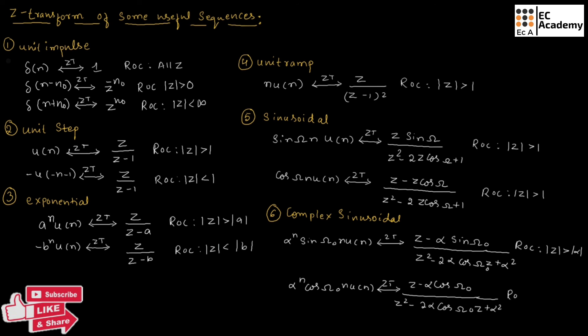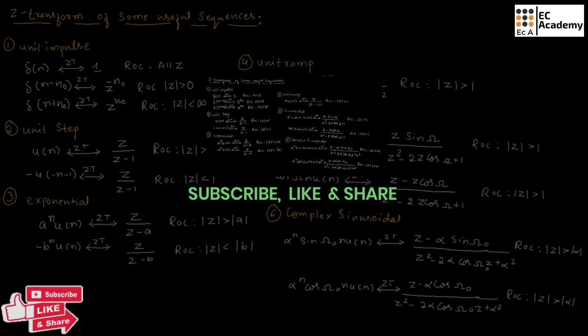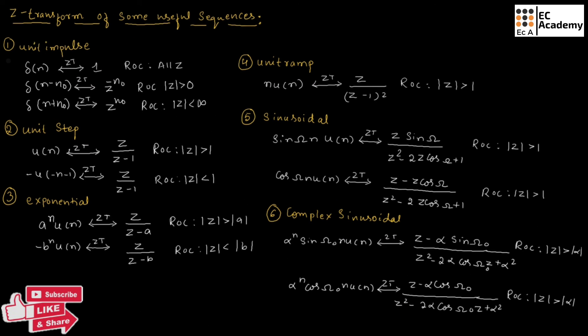Here ROC will be magnitude of Z greater than magnitude of alpha. So these are Z-transforms of some useful sequences which are very helpful in solving problems. Remember these sequences, their Z-transforms, and the ROC so that it is helpful for us to solve problems. Hope you have understood the topic. Thank you.